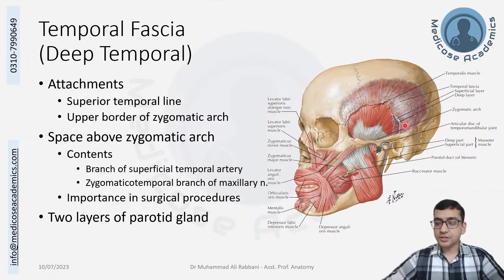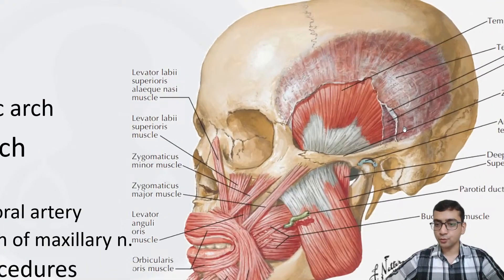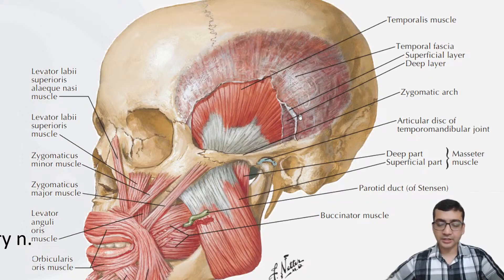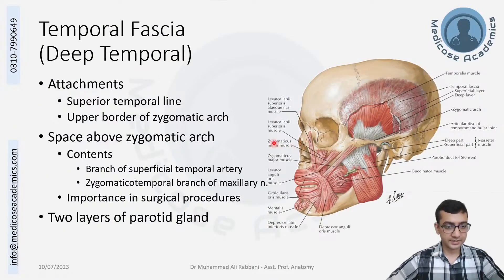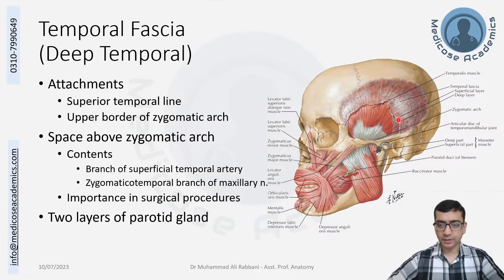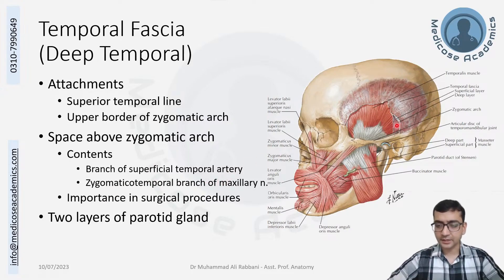Before attaching to the zygomatic arch, the deep temporal fascia splits into two fascial layers — superficial and deep — creating a small cavity on top of the arch. This cavity contains a penetrating branch from the superficial temporal artery called the middle or zygomaticotemporal branch, and the zygomaticotemporal branch of the maxillary nerve, which are the structures passing inside.